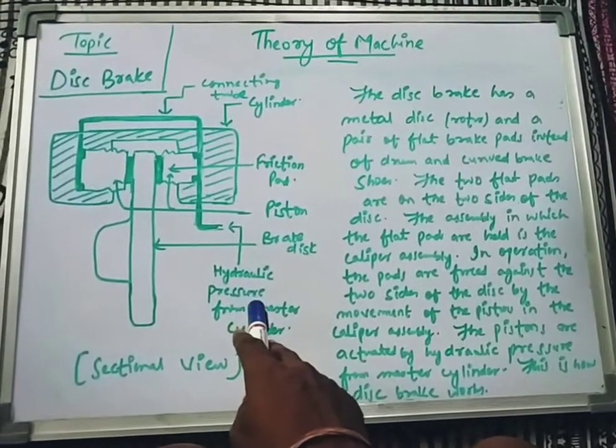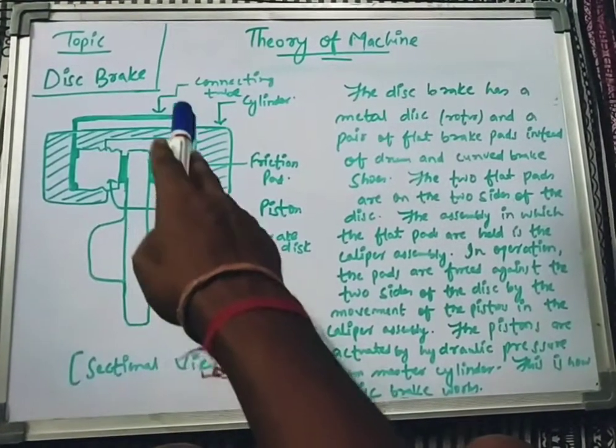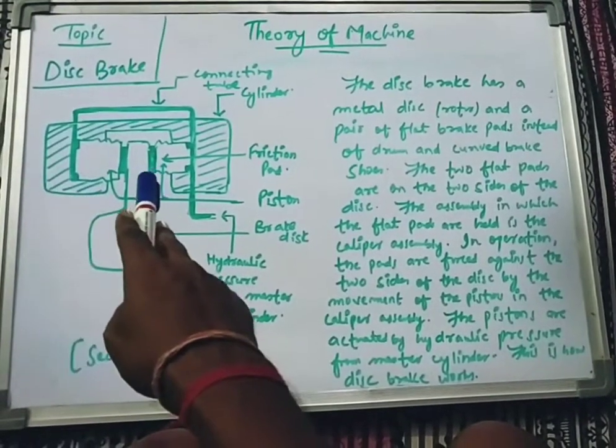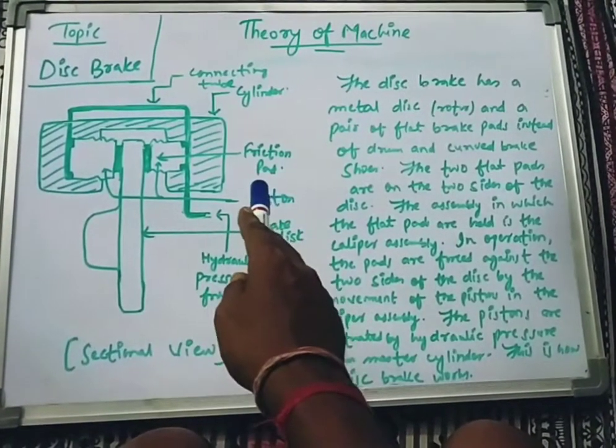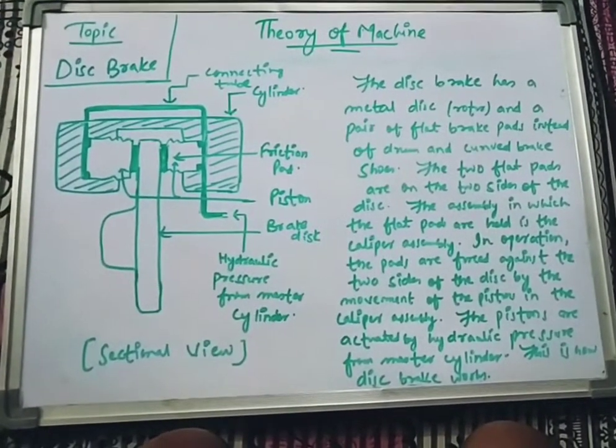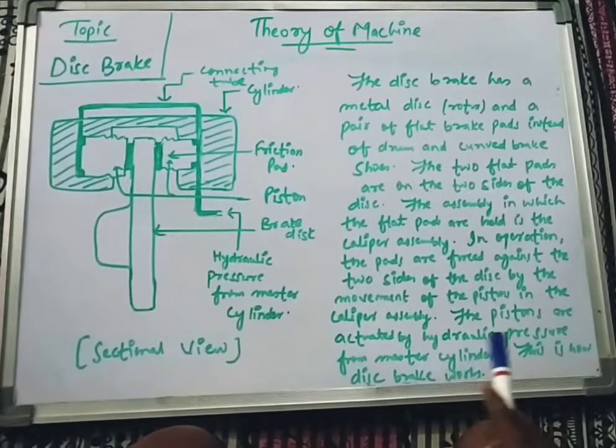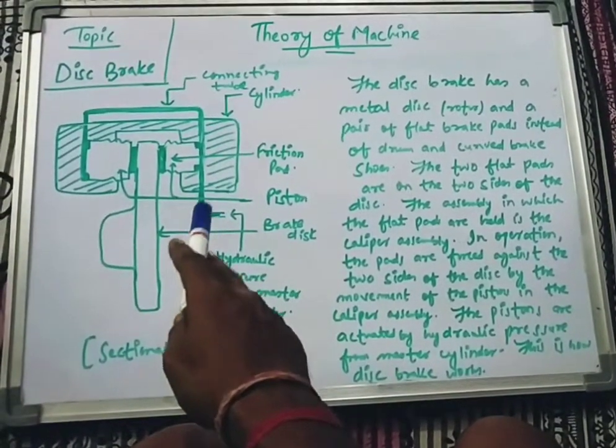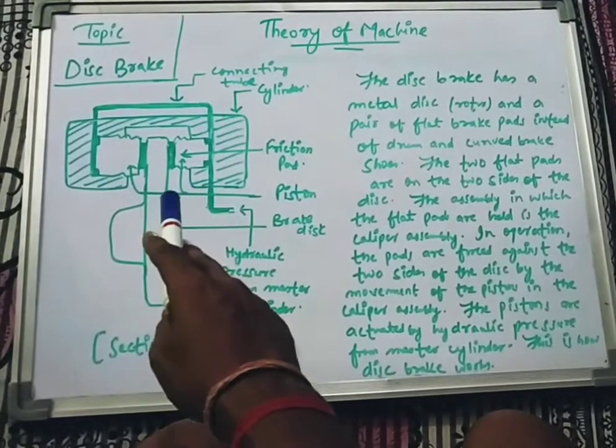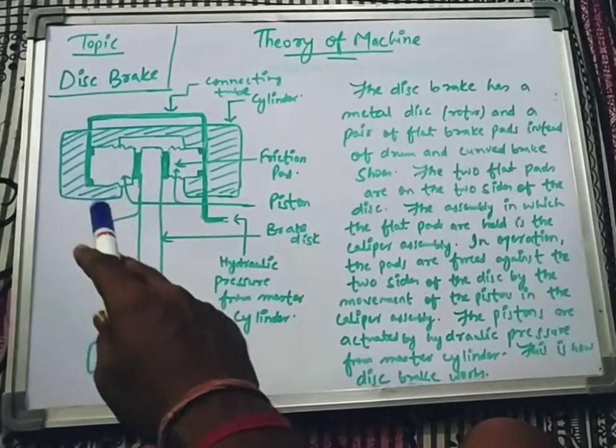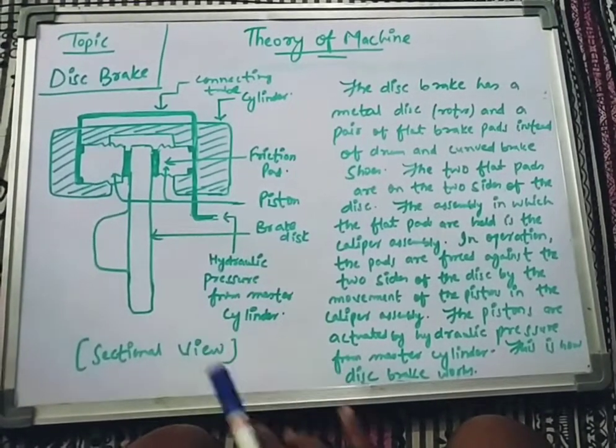Hydraulic fluid flows through the connecting tube and pushes the piston inwards, which applies force against the friction pad and brake disc. The pistons are actuated by hydraulic pressure from the master cylinder.